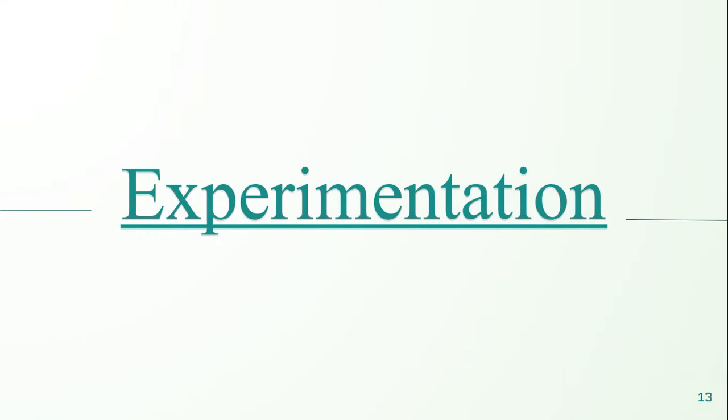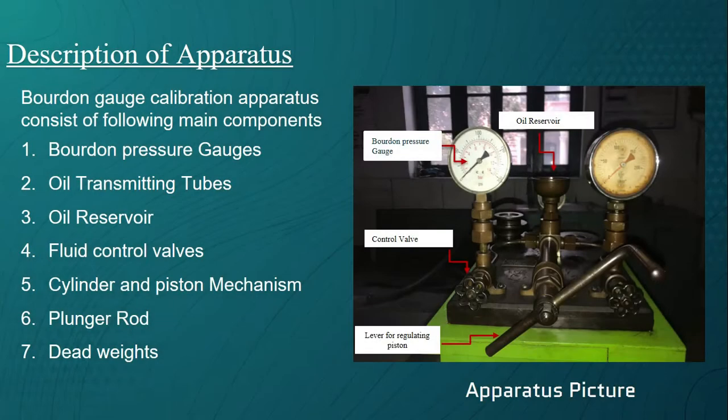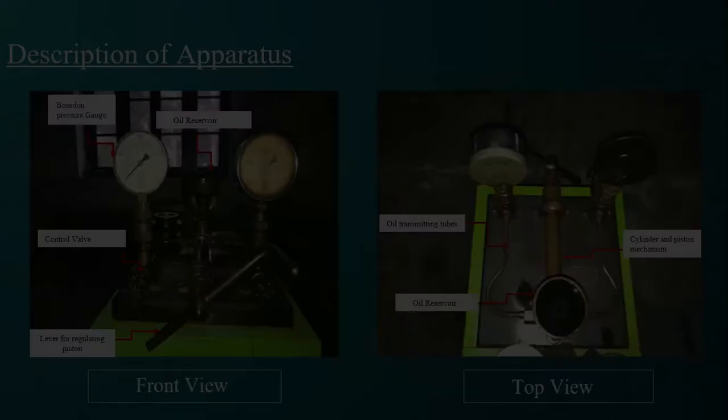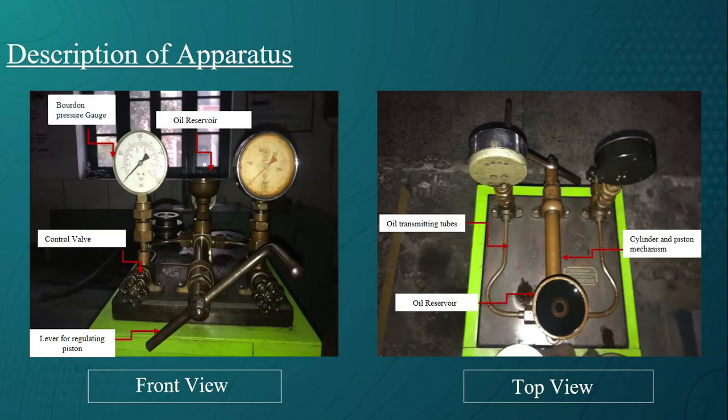Now we will move toward our experimentation section. This is our Bourdon gauge calibration unit. Bourdon gauge calibration apparatus consists of following main components: Bourdon pressure gauges, oil transmitting tubes, oil reservoir, fluid control valves, cylinder and piston mechanism, plunger rod and dead weights. The Bourdon gauges have two types of units displayed on dial for pressure measuring: one is in bar and other in pounds per inch square.